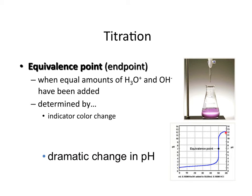Looking at a titration curve, we're starting with an acid because our pH is below 7. Up in the burette we have our standard base solution — we know that concentration. As we add the base, the pH slowly increases, and suddenly you'll see a sharp change in pH — that point is your equivalence point. As you continue adding base, it becomes more and more basic. At the equivalence point, we've neutralized the solution and our H3O+ and OH− concentrations have been added in equal amounts.